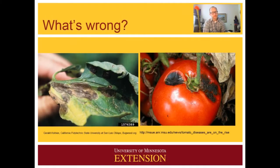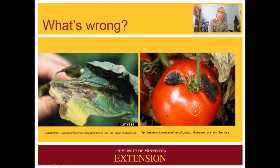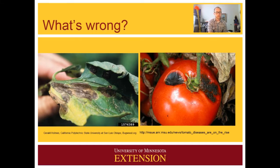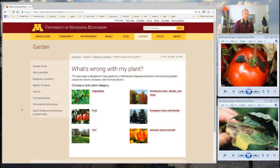Let's say I'm a tomato grower and I've been having some issues with my plants. I'm noticing some dark spots on my leaves, and I've got some sunken spots — or you might say lesions — that are really dark in color on the fruit. I really can't sell these tomatoes, so I'm pretty concerned about what's going on and I need to figure out what's wrong with my plant.